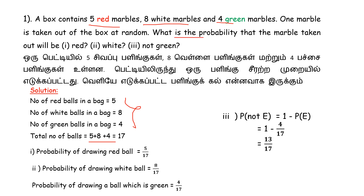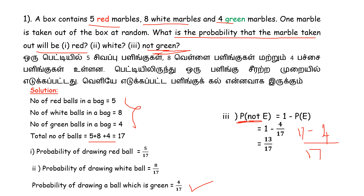What is the probability that the marble taken out will be not green? For not green, we use the formula 1 minus P(E). So 1 minus 4 divided by 17, which gives us (17 minus 4) divided by 17 = 13 divided by 17. That is the answer.